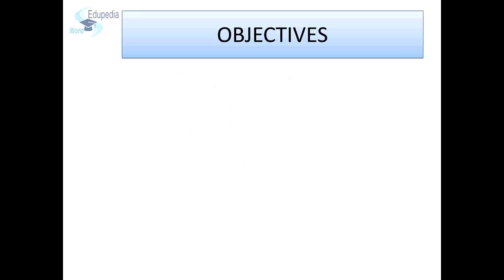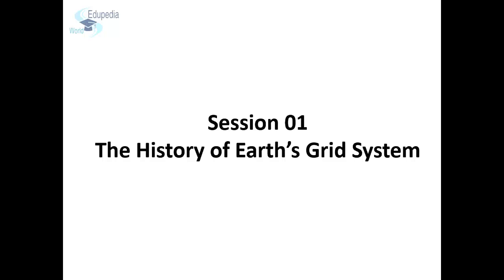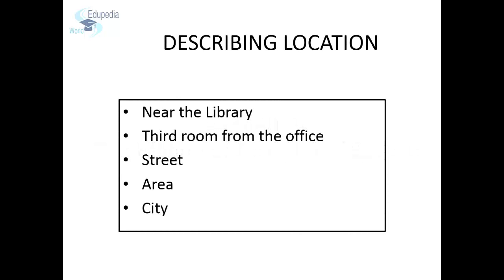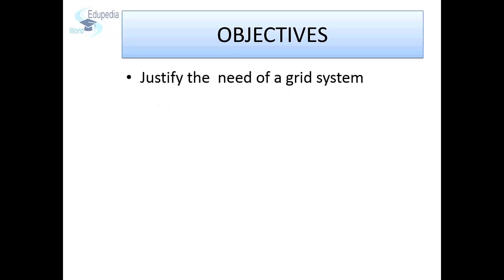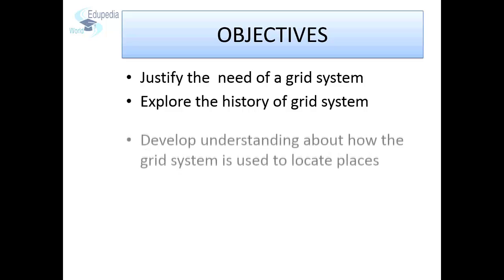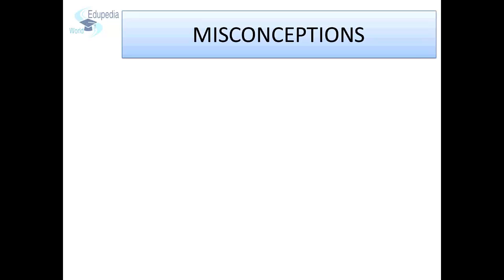This is the first session of the chapter. In this session, we are going to find out how the concept of a grid came into existence. We are going to try and achieve the following objectives: justify the need of a grid system, explore the history of the grid system, and develop understanding about how the grid system is used to locate places. Before we begin our exploration about the history of the grid system, let us look at some of the common misconceptions that exist regarding our grid system.